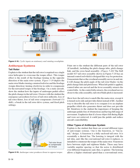Point out to the student the different parts of the tail rotor, if installed, including the pitch change tube, pitch change link, and the crosshead assembly. The Bell Model 427 tail rotor assembly has an internal control rod designed for protection. Demonstrate that as the crosshead assembly moves in and out, it will change the pitch angle of the tail rotor blades via the pitch change link and pitch horns. When left pedal is applied, control tubes are moved and the lever assembly retracts the control tube, moving the crosshead closer to the yoke assembly and increasing tail rotor blade pitch. Show how the tail rotor is much like the main rotor, except it is turned on its side and provides thrust instead of lift. Reinforce to the student the importance of keeping the anti-torque pedals free of obstructions and having full range of movement, as a loose object could jam the pedals and reduce aircraft controllability.